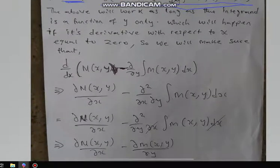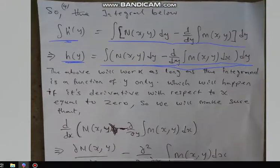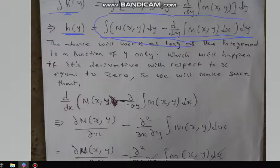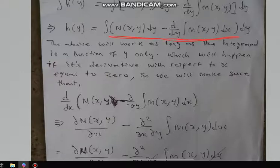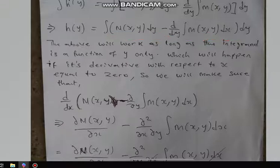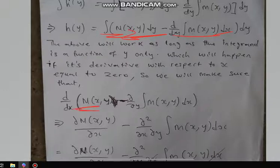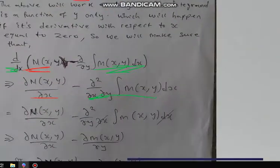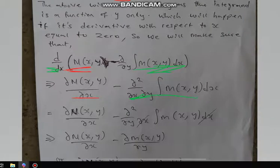To make that happen, I set d/dx of [N − ∂/∂y(∫M dx)] = 0. Differentiating this quantity with respect to x: we distribute the integral sign, differentiating the N part gives ∂N/∂x, and differentiating the ∂/∂y(∫M dx) part gives ∂M/∂y.